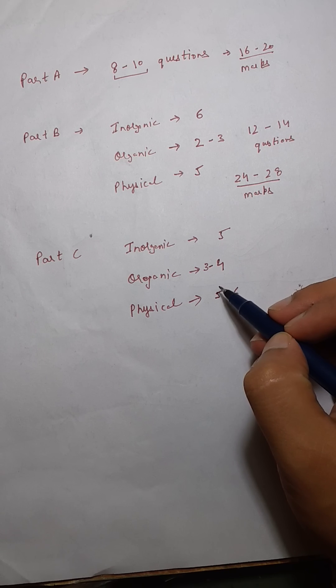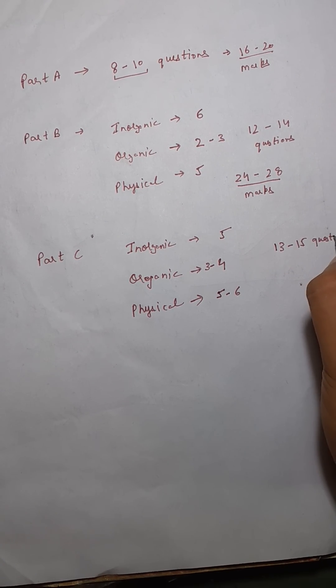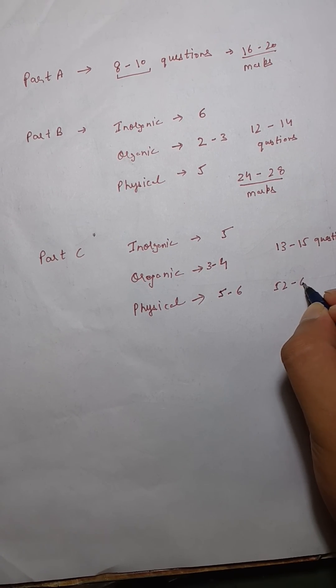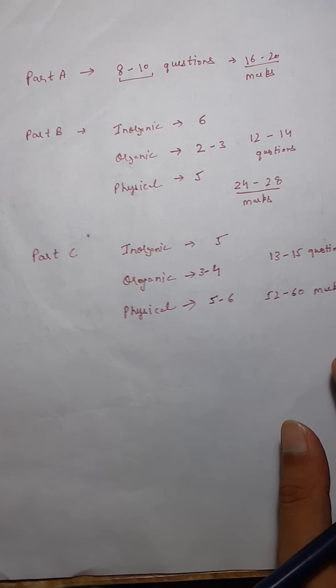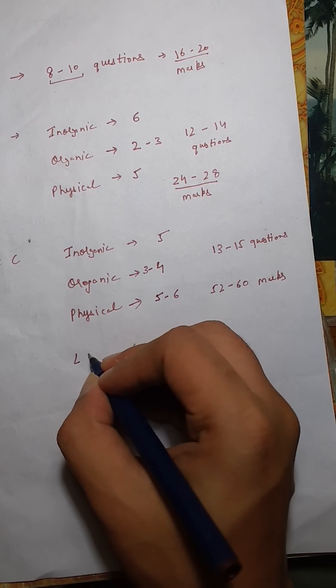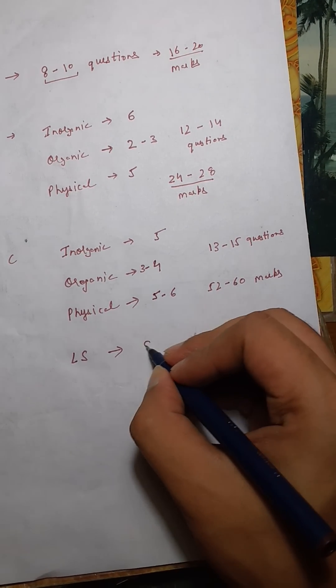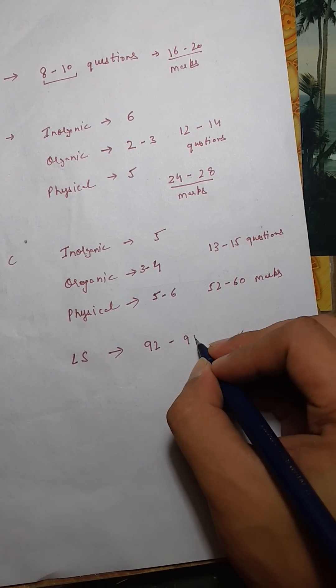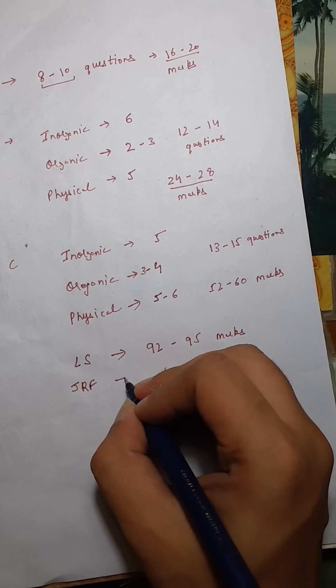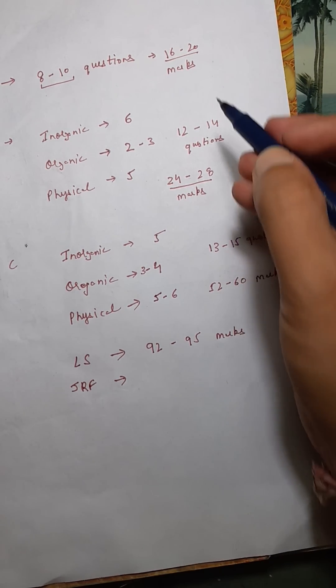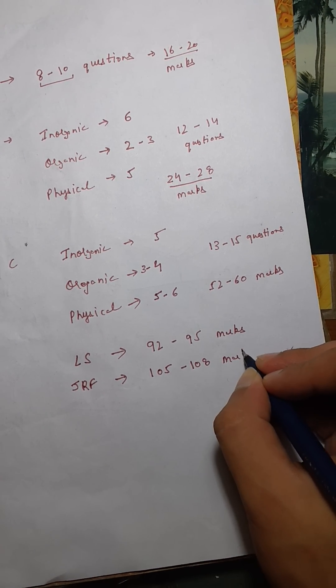So total we have is five plus three, eight plus five, thirteen to fifteen questions we have from part C that makes it 52 to 60 marks. So now if we calculate the expected cutoff, let's say for LS. So we'll calculate the lower values so 16 plus 24, 40 plus 52, 92. So around 92 to I would say a little higher side 95 marks is LS and if we go for JRF then we have 60 plus 28 that's 88 plus 20 so 108. So I'll say 105 to 108 marks will be the cutoff for JRF. So this is my prediction.